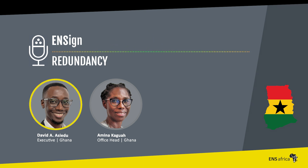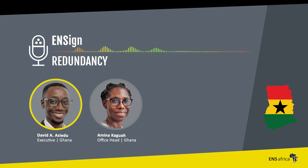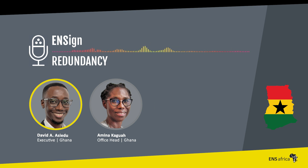Hello listeners. Welcome to the maiden edition of the Ensign podcast. On this podcast, we discuss important commercial and legal issues in a simple and relatable way. Our guest today is Amina Kagwa. Amina is the head of office of ENS Africa Ghana. She is also the partner in charge of the corporate and commercial practice.